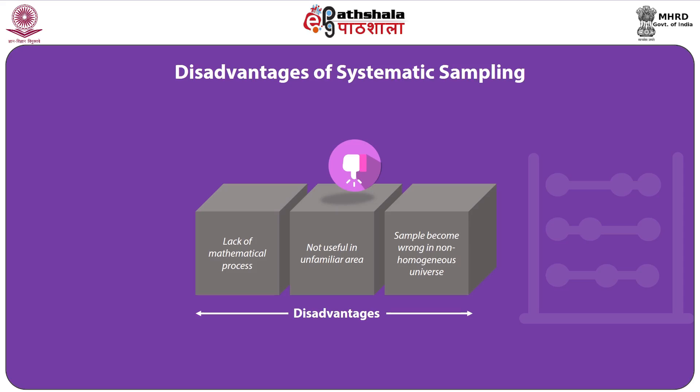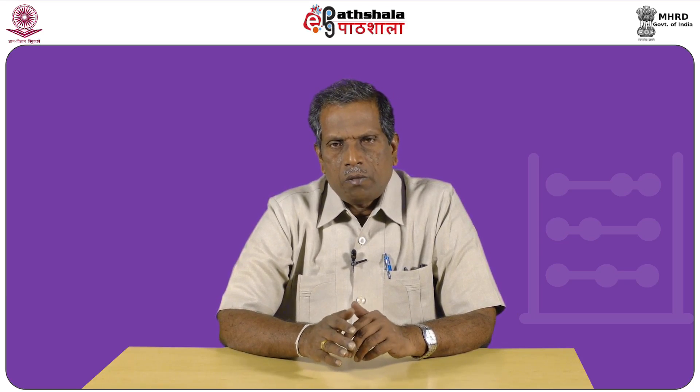Now we move to stratified random sampling. Under this procedure, the entire population or universe is divided into a number of homogeneous groups or strata based on some common characteristics. Then the required sample is selected using simple random or systematic sampling methods from the total of each stratum. Commonly used stratum characteristics are gender (male or female), place of residence (rural or urban), caste groups, and elderly population by age. This sampling method is of two types: stratified proportionate sampling and stratified disproportionate sampling.